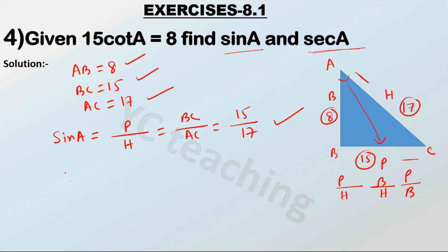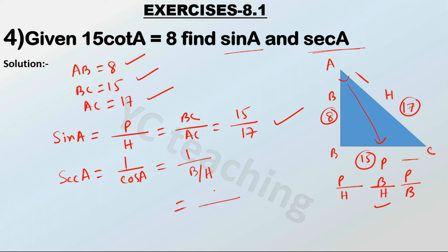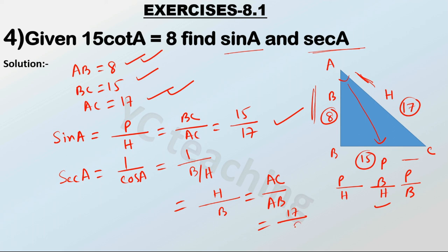Now we have to find the value of sec A. Sec A is equal to 1 by cos A — the reciprocal of cos A is sec A. Cos A is equal to base by hypotenuse, so sec A is hypotenuse by base. Our hypotenuse AC is 17 and our base AB is 8. So sec A equals 17 by 8.